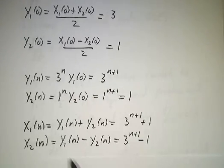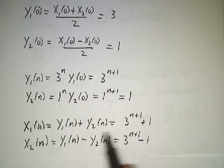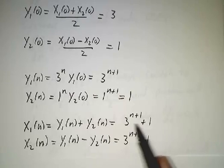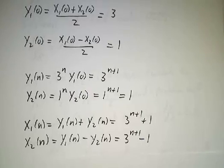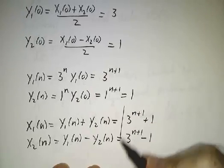And finally, we convert back. y1 of n plus y2 of n is 3 to the n plus 1. y1 of n minus y2 of n is 3 to the n plus 1 minus 1. And that's our answer.